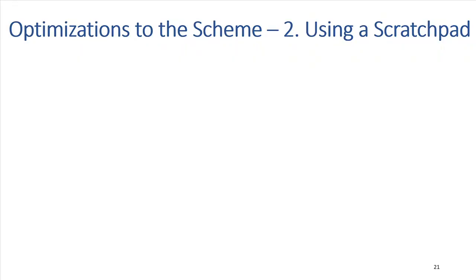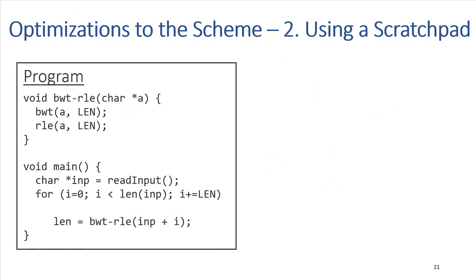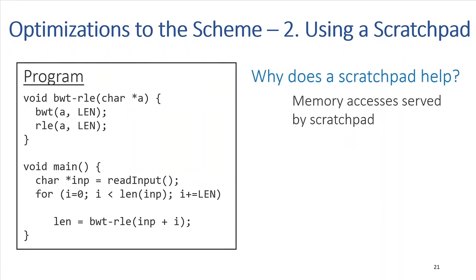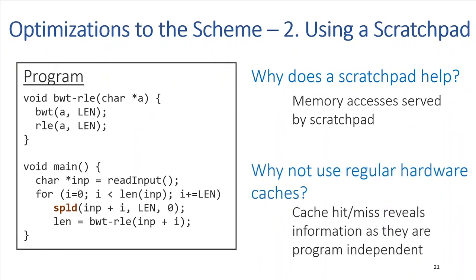The second optimization is using a scratch pad. Some programs exhibit inherent locality — they read a chunk of data, perform a lot of computation on it, write it back, and then read the next chunk. For such programs, it is worthwhile to store that chunk on-chip so that accesses are not visible to the adversary and are not ORAM accesses. We do not use a regular hardware cache because a cache hit or miss can reveal program-dependent information.